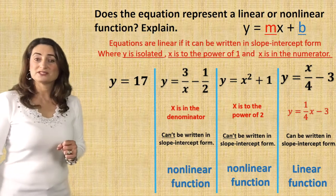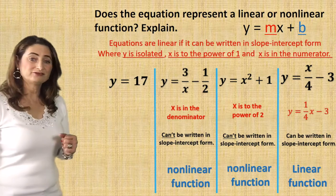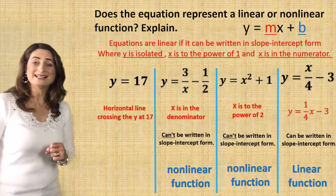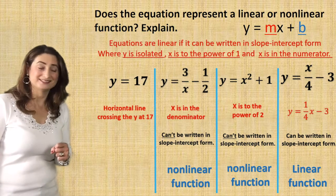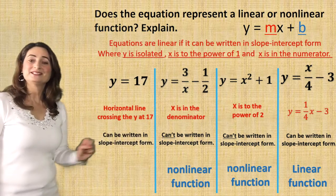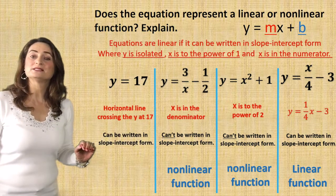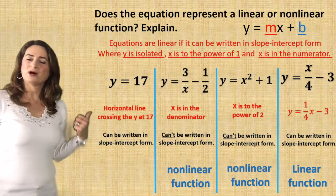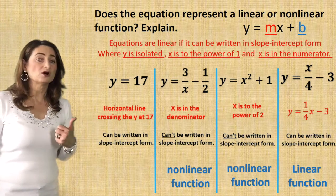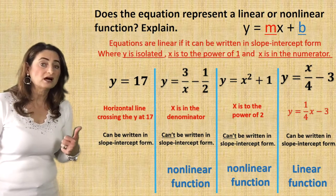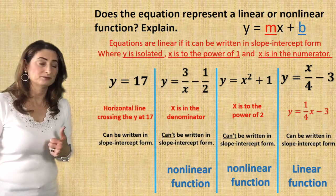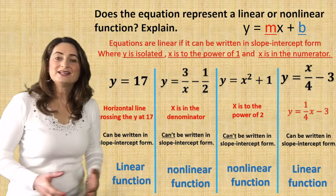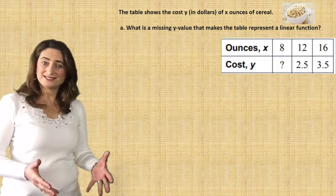The last one: y = 17. That's a horizontal line crossing the y-axis at 17. It can be written in slope-intercept form because the slope is zero, so you don't have an x term, which is fine. But y is isolated and equals a number — that's a horizontal line crossing y at that number. So it is a linear function.